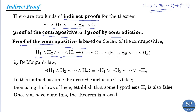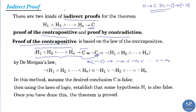Here we can apply De Morgan's law. By De Morgan's law, negation of (H1 ∧ H2 ∧ H3 ∧ ... ∧ Hn) is logically equivalent to (¬H1 ∨ ¬H2 ∨ ... ∨ ¬Hn). So this theorem is logically equivalent to negation C implies (¬H1 ∨ ¬H2 ∨ ... ∨ ¬Hn).